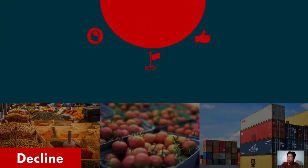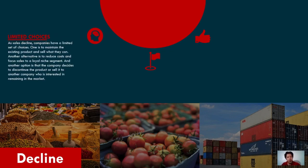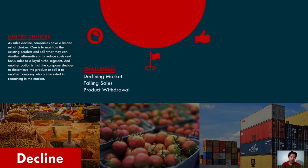The decline stage is characterized by limited choices. As sales decline, companies have a limited set of options: one is to maintain the existing product and sell what they can; another is to reduce cost and focus sales on a loyal niche or market segment; another option is to discontinue the product or sell it to another company interested in remaining in the market. There is customer withdrawal, with customers becoming more and more resistant to purchasing the product, and there are falling sales and a declining market.